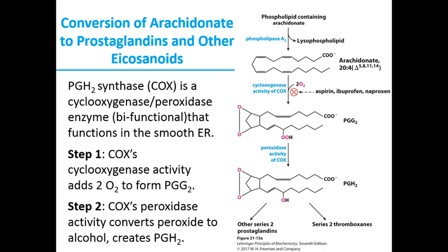Enzymes of the smooth endoplasmic reticulum then convert arachidinate to prostaglandins, PGG2 and PGH2. PGH2 is the immediate precursor of many other prostaglandins and thromboxanes. The two reactions that lead to PGH2 are catalyzed by a bifunctional enzyme called PGH2 synthase or cyclooxygenase. In the first step, cyclooxygenase introduces a molecular oxygen to convert arachidinate to PGG2, resulting in a peroxide kind of compound. In the next step, PGG2 is converted to PGH2 by the peroxidase activity of COX, where this hydroperoxide molecule is converted to an alcohol.